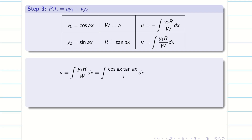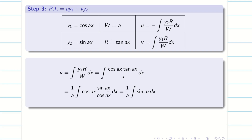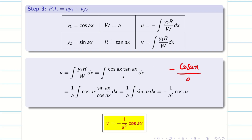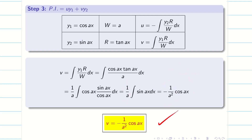Substituting the values for v: cos(ax) times tan(ax) divided by a. Writing tan(ax) as sin(ax)/cos(ax), the cosines cancel. We have (1/a) times the integral of sin(ax) dx. The integral of sin(ax) is −cos(ax)/a. Multiplying by 1/a gives v = −(1/a²) cos(ax).